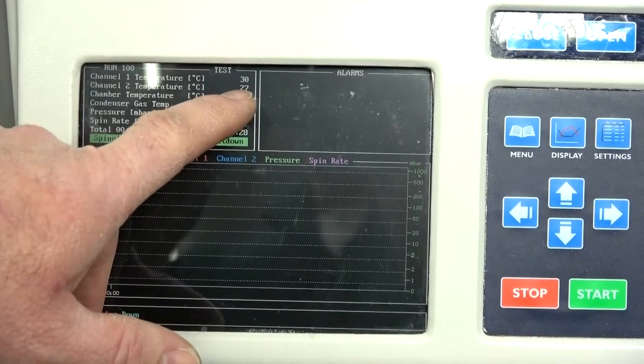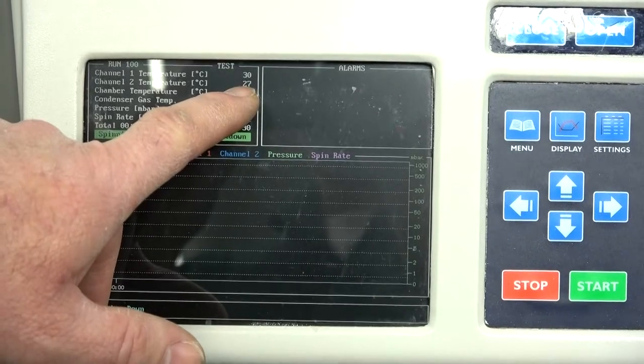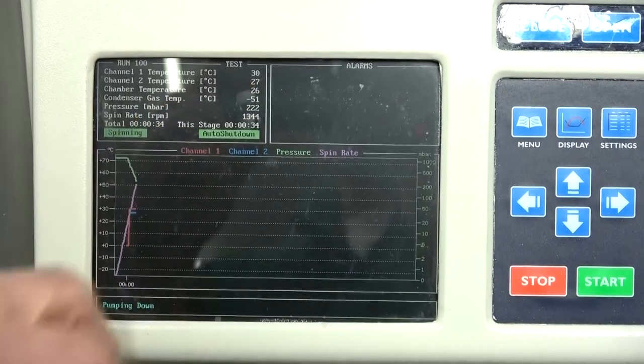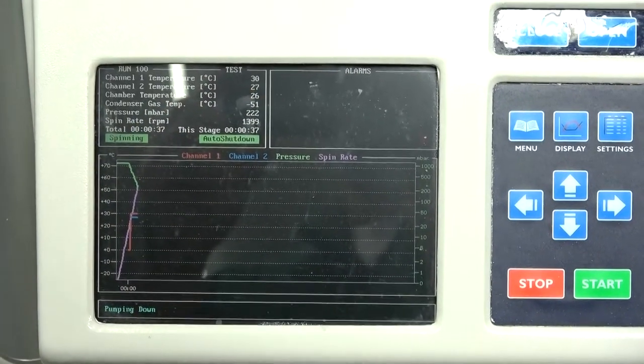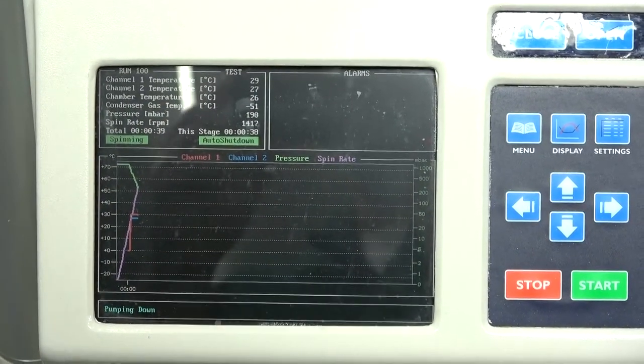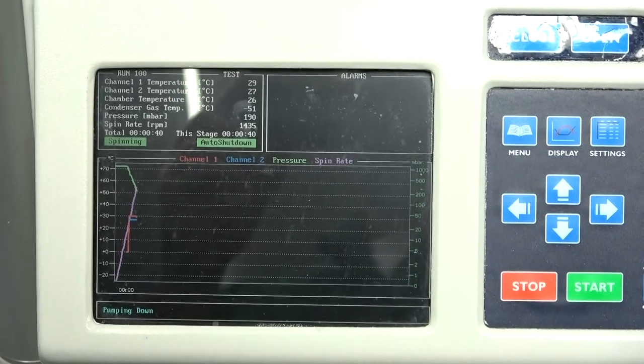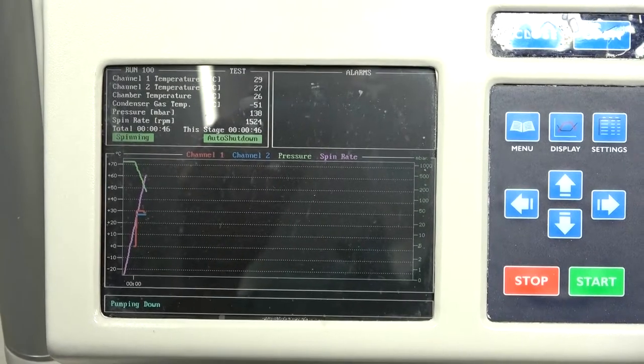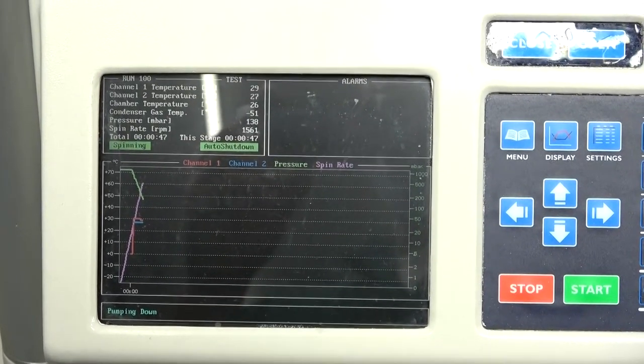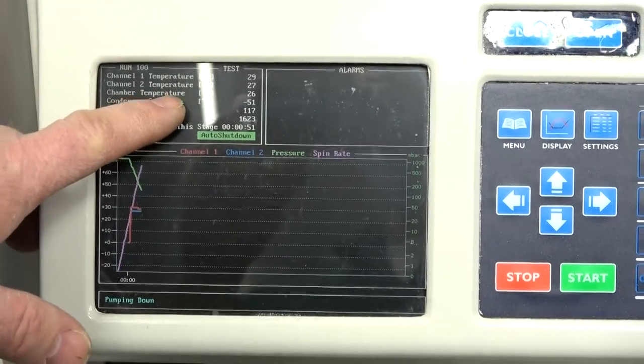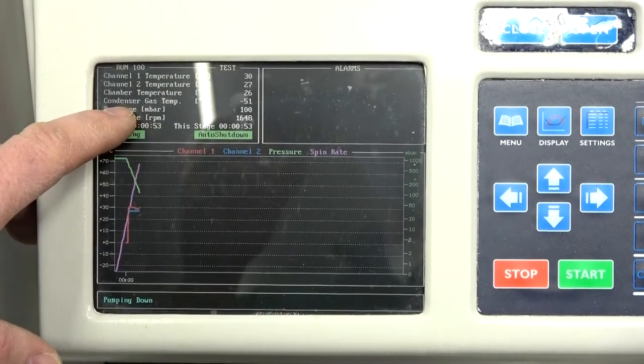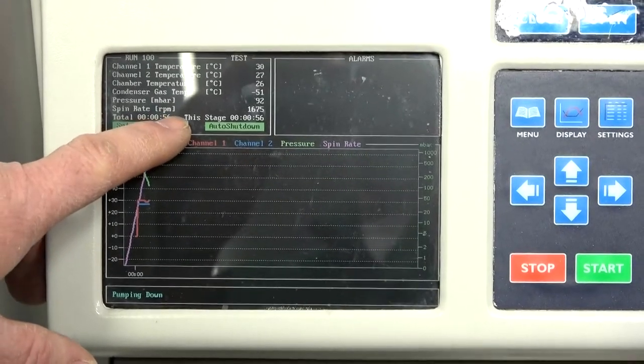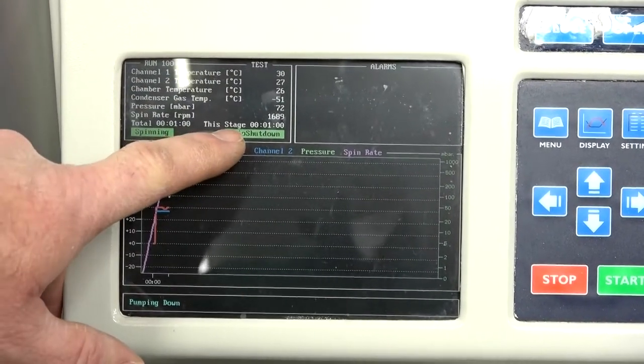And then also now we're online on both our temperatures. So we got the temperature one and temperature two. And they are measuring the temperature, which we don't have no samples in right now. It's just measuring the temperature off of the actual swing bucket on the rotor. So but same thing, you would put your sample in there and then you got your chamber temperatures and then your RPMs here and your time here.